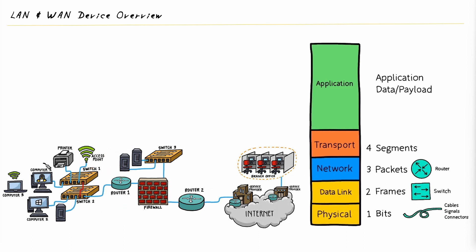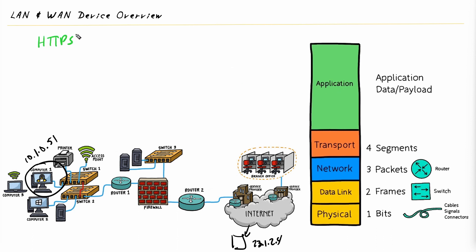For this scenario, let's use computer one going to a secure website on a server out on the internet. Let's imagine that web server is 23.1.2.4, and computer one is 10.1.0.51. The user has their browser open and is going to the secure website. Behind the scenes, the application layer service being used is HTTPS, and I'll color-code these so we can match them up.